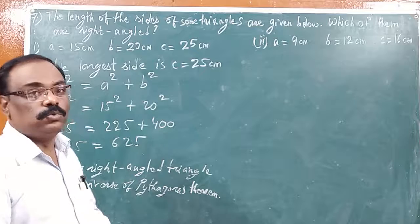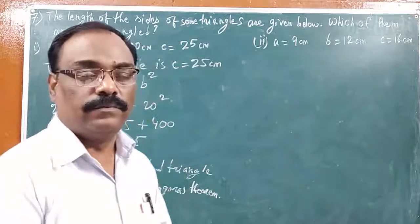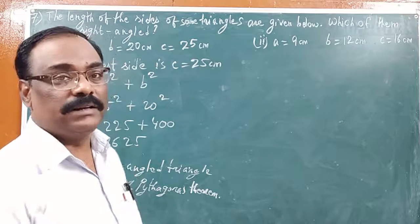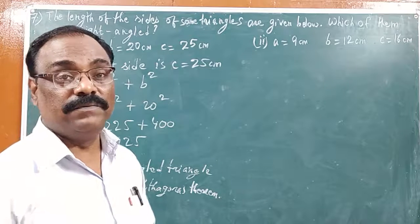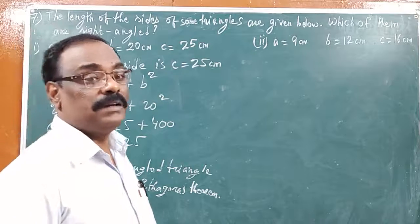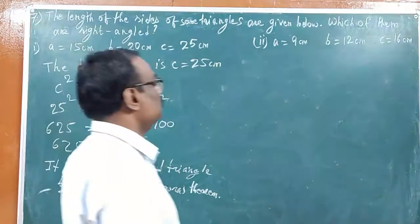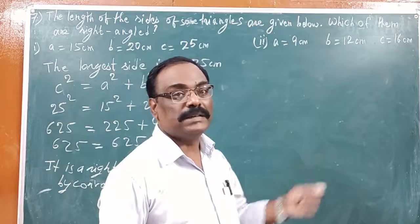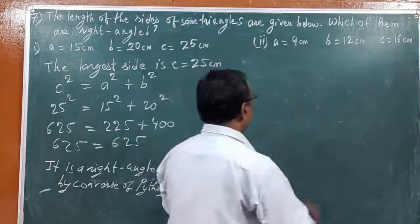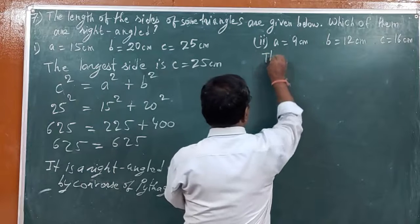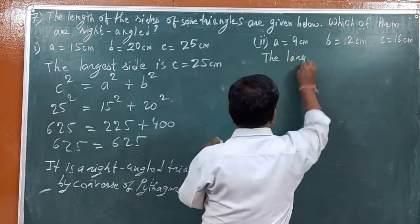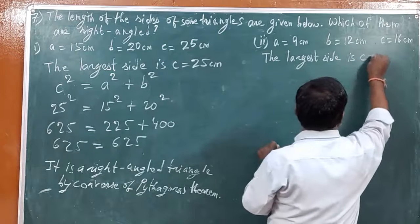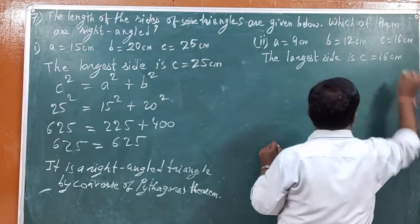In the same way, now we need to do the second one also. We are going to follow the same procedure. If we get the same result, we will again say that it is a right angle triangle. If we do not get the same, we will say it is not a right angle triangle. Again, side A is 9, B is 12, C is 16. We compare which side is the largest — the largest side is C, that is equal to 16 cm.